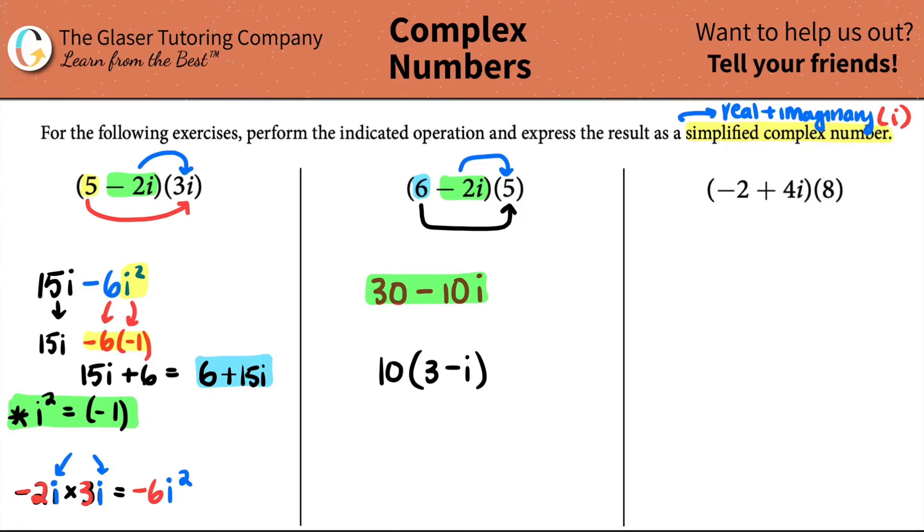Moving on to the next one. Same thing. I have two parentheses being multiplied by each other. I got to play fair. So negative 2 plus 4i all being multiplied by 8. The first term is like, yeah, I'm going to be multiplied by that 8. But then the second term is like, well, if you're going to be multiplied by 8, I need to be multiplied by 8 as well. So let's do it. Negative 2 times 8 is a negative 16. 4i times 8 is a plus 32i.